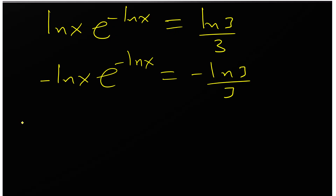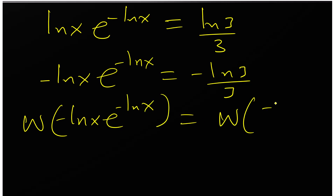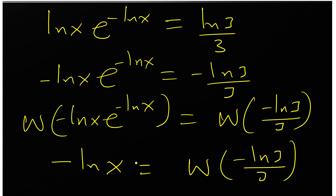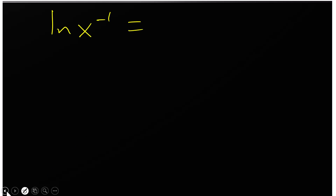Now we apply the Lambert W function to both sides. W of negative ln(x) times e to the negative ln(x) gives us negative ln(x) on the left side, which equals W of negative ln(3) over 3. Bringing the negative one exponent out, we have ln(x) to the power minus one equals W of negative ln(3) over 3.